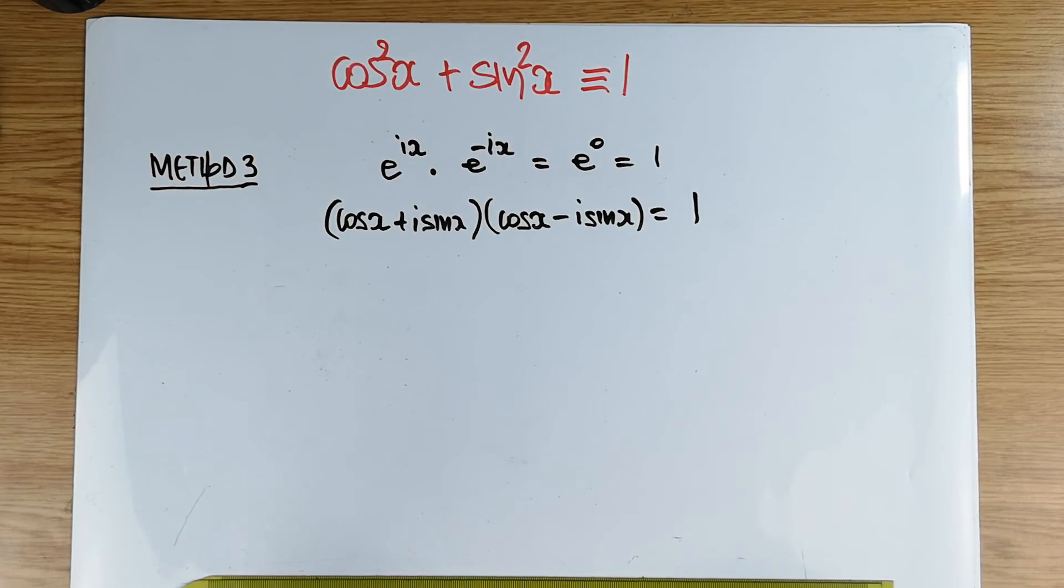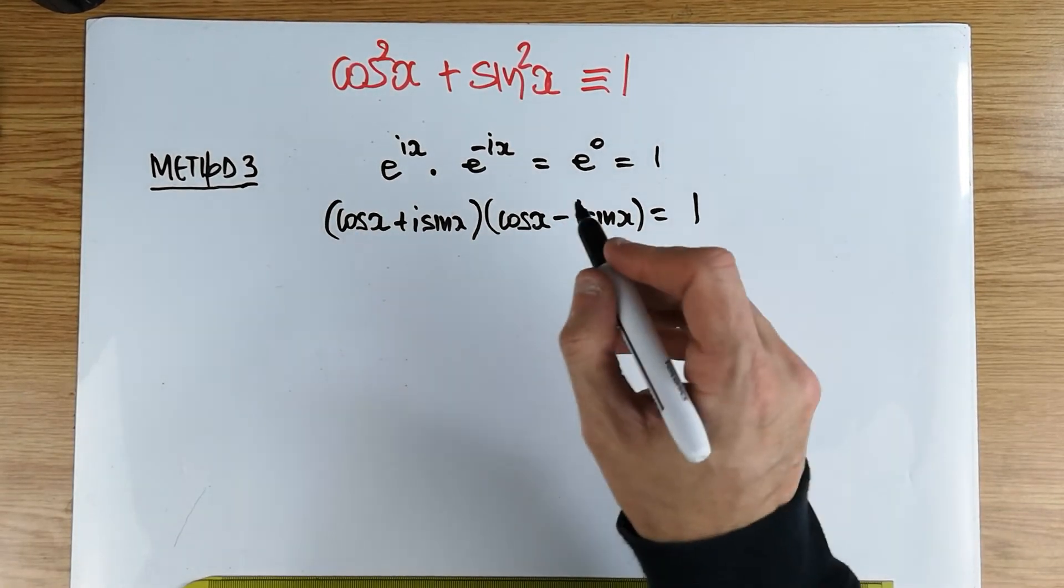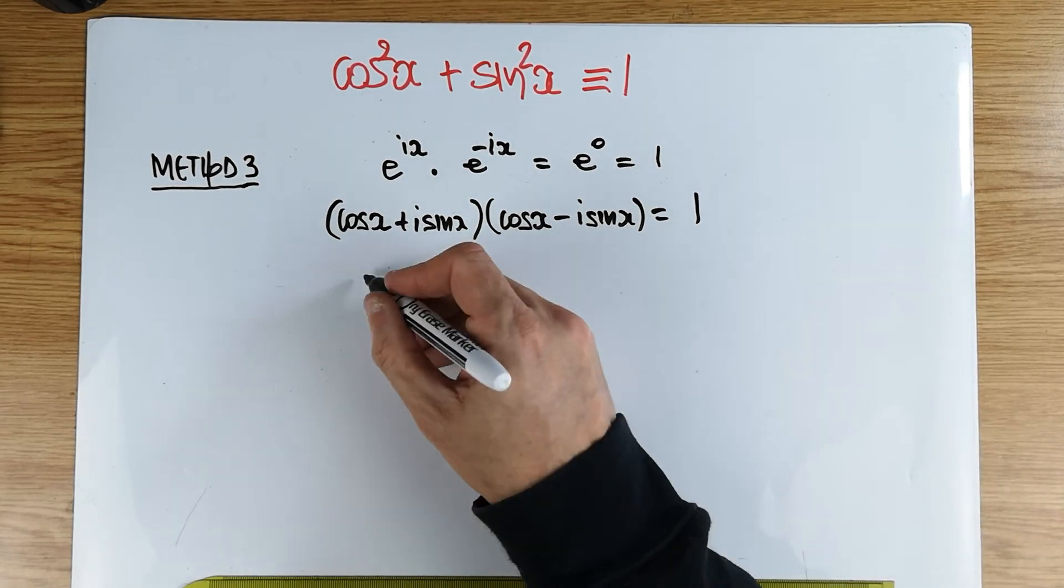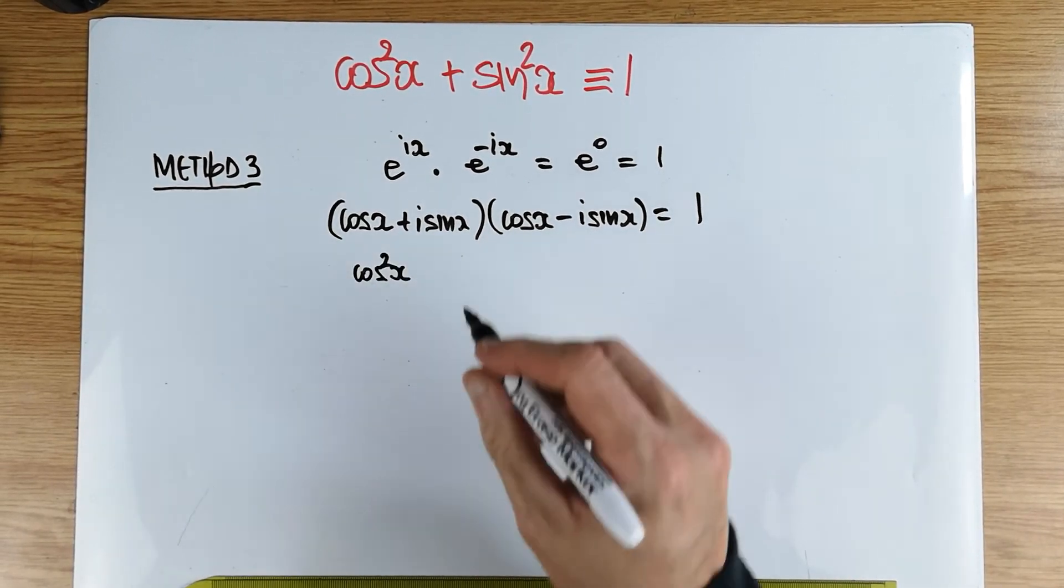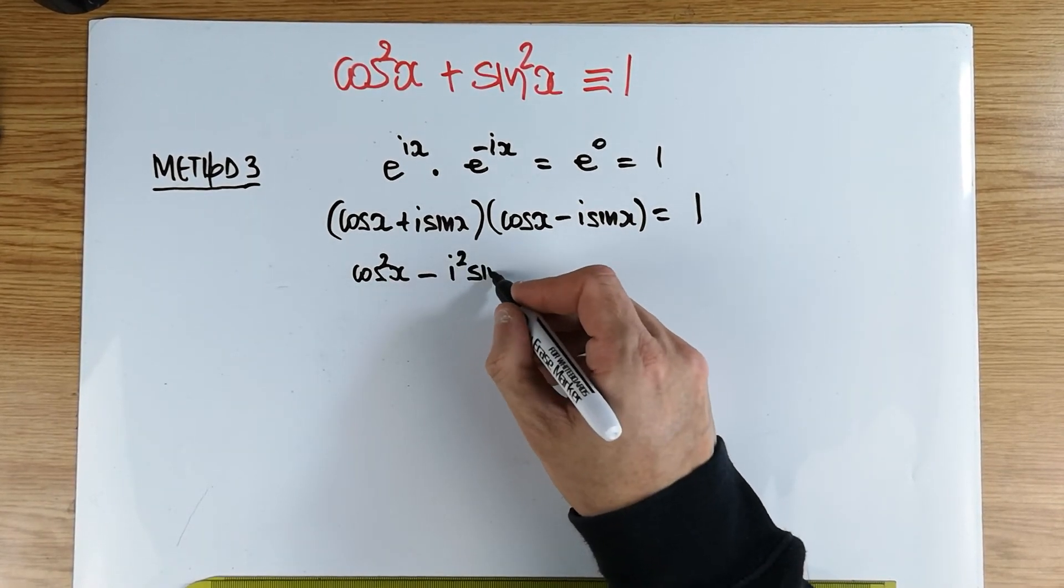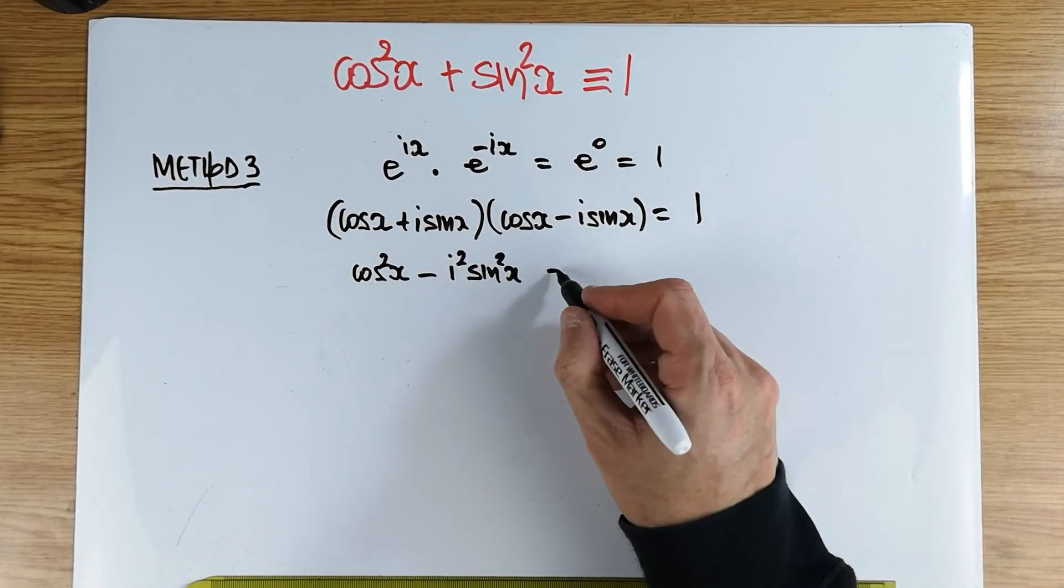All we need to do is just multiply these brackets out. And these are, of course, I'm going to show workings for this. It's just the difference of squares. You're going to get a cos squared minus i squared sine squared of x is equal to one.